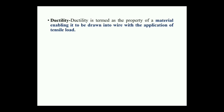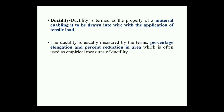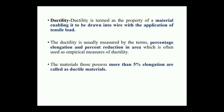Ductility: a material has the ability to be drawn into wire form by the application of tensile load. Generally, wire is produced by ductile materials. Ductility is usually measured by percentage elongation and percentage reduction in area, which are used as empirical measurements of ductility. If a material has more than 5% elongation after failure, it is called a ductile material. If elongation is less than 5% at failure, it is considered a brittle material.